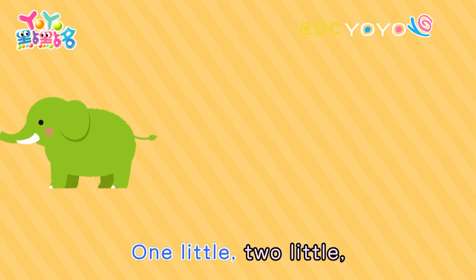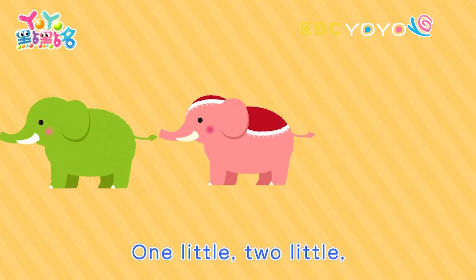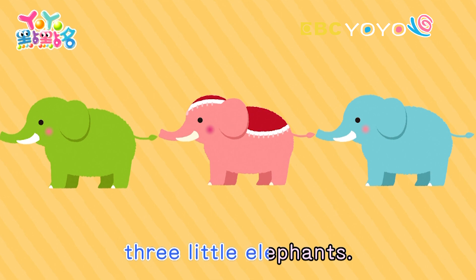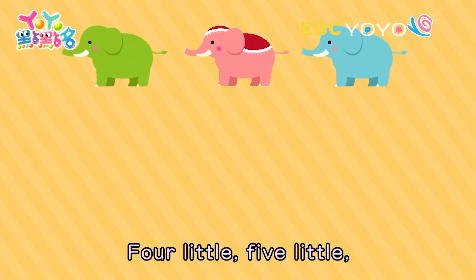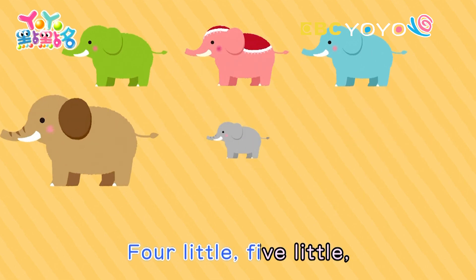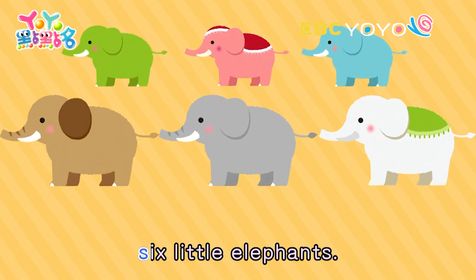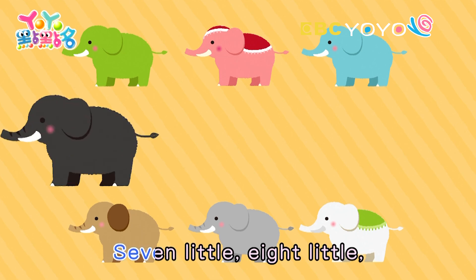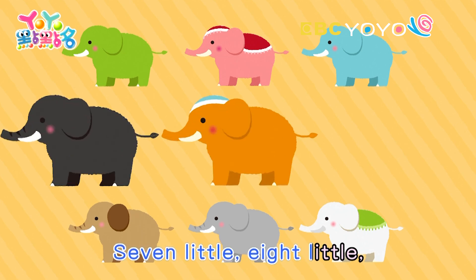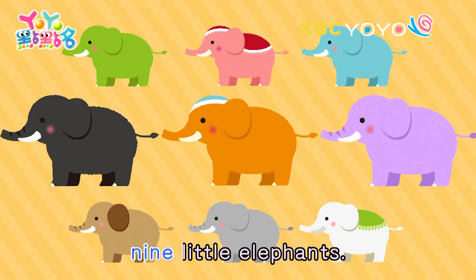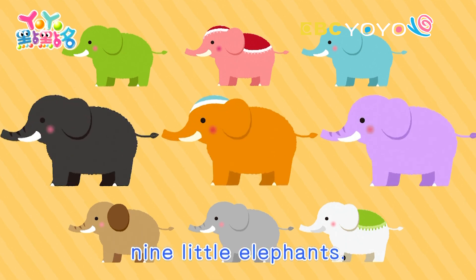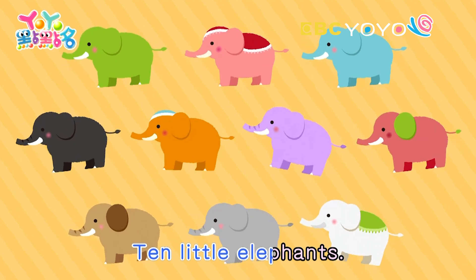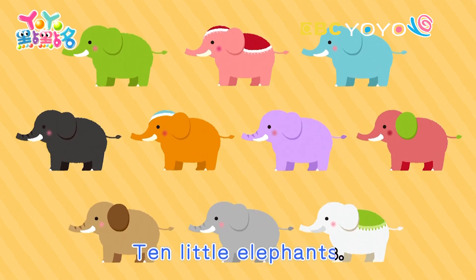One little, two little, three little elephants. Four little, five little, six little elephants. Seven little, eight little, nine little elephants. Ten little elephants.